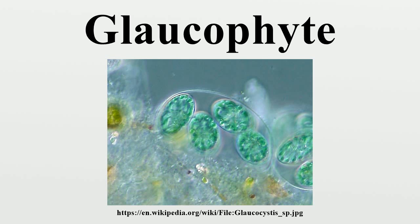Glaucophytes contain the photosynthetic pigment Chlorophyll a, along with red algae and cyanobacteria. They harvest light via phycobilisomes, structures consisting largely of phycobiliproteins. The green algae and land plants have lost that pigment.